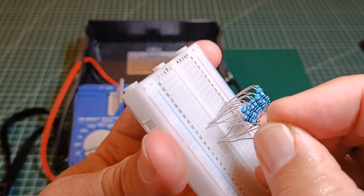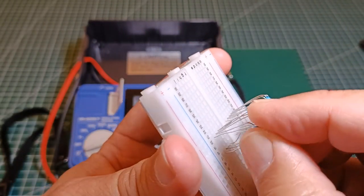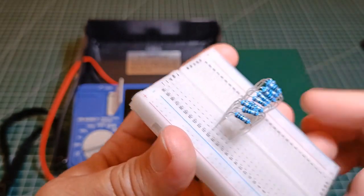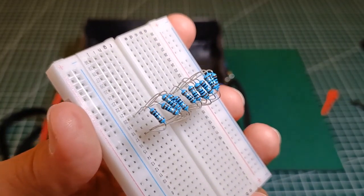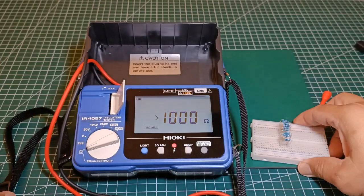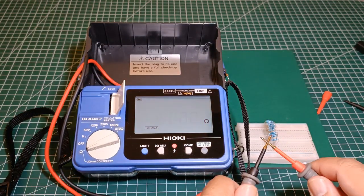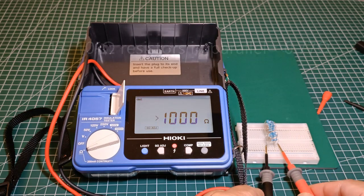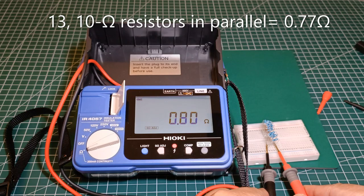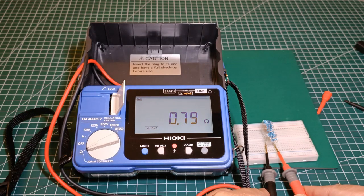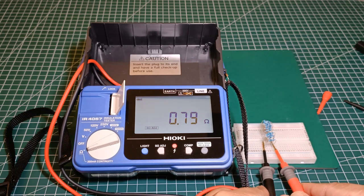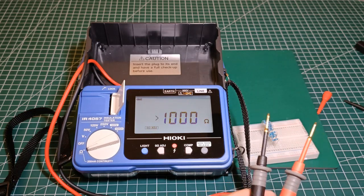I will connect one more 10 ohm resistor in parallel with this set, so 13 ten ohm resistors in parallel should be around 0.77 ohms. I get a reading of 0.79 ohms, also a good reading, acceptable.